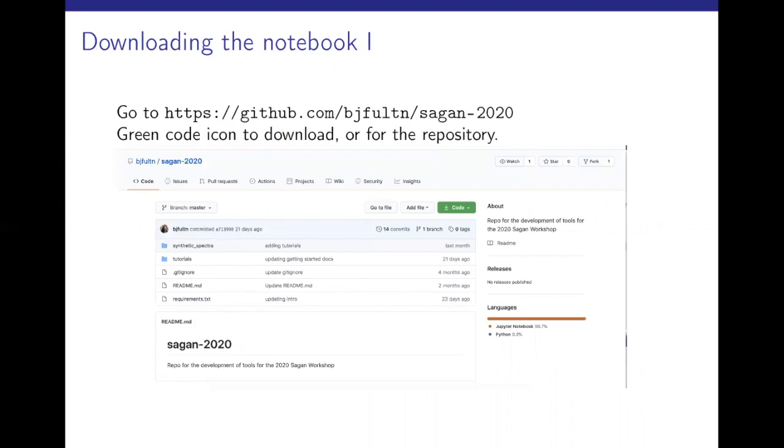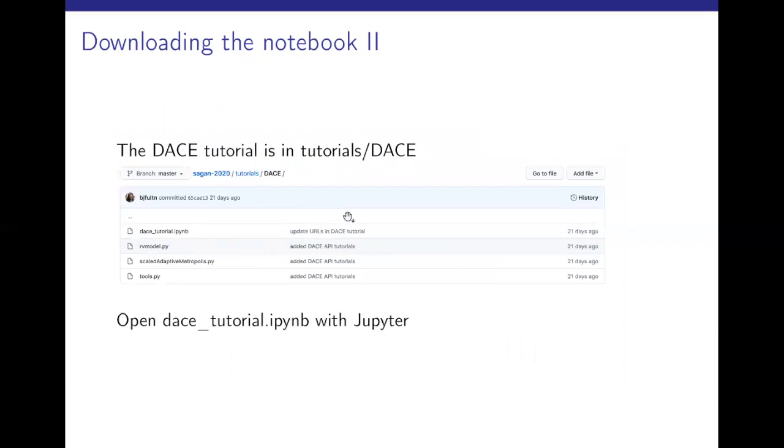Downloading the notebook, you can go to the GitHub page of the second summer workshop, which is hosted by BJ Fulton. You can either fork the repository or download the code via this green button. You will have a zip file that you can unzip and then in the folder that you get, you have subfolders. You follow this path and in DACE, you have DACE tutorial and you can open this with Jupyter.